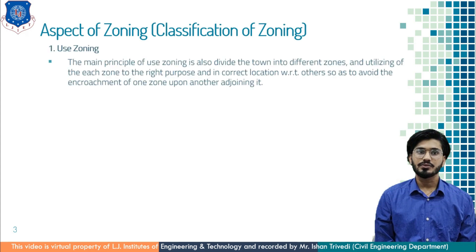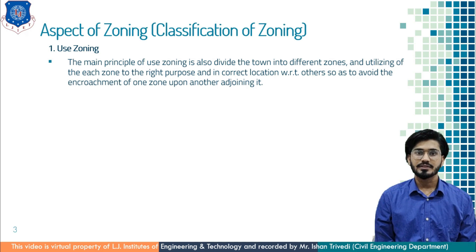Let us start with use zoning. The main principle of use zoning is to divide the town into different zones, utilizing each zone to the right purpose and correct location with respect to each other, and to divide the town in such a manner that we avoid the encroachment of one zone into another zone.